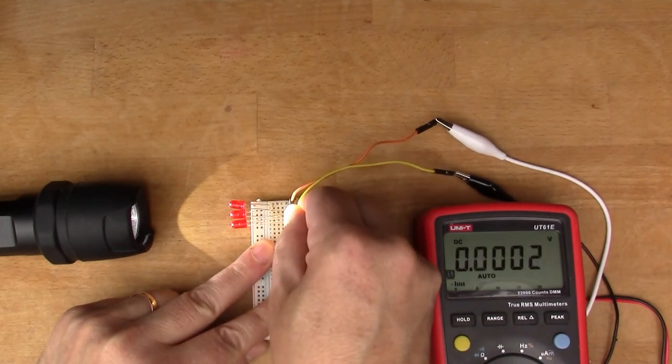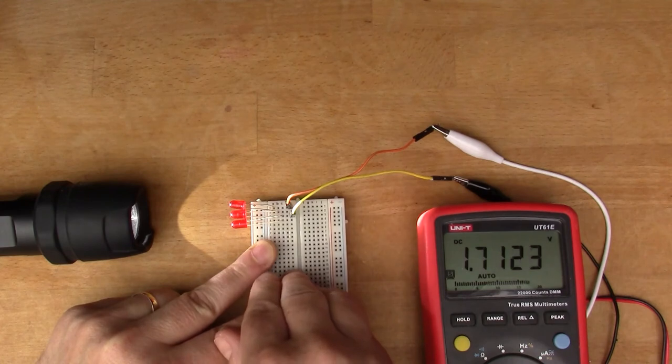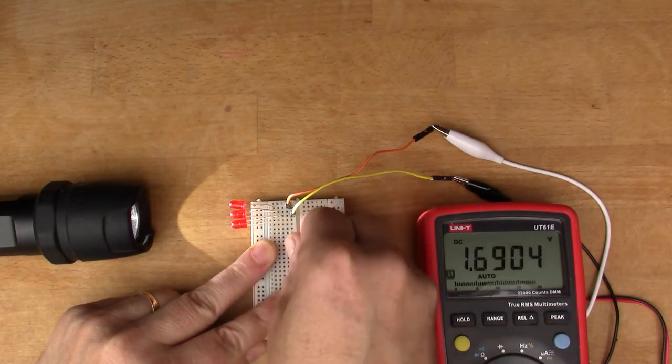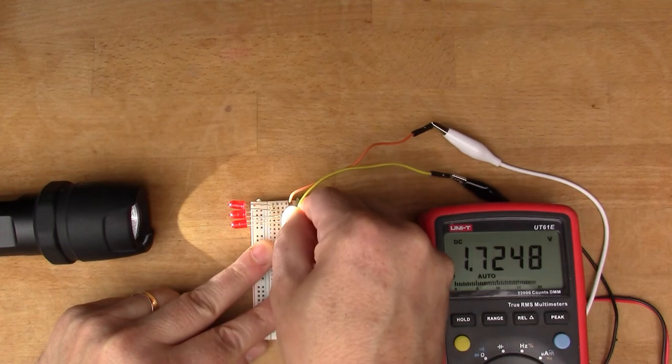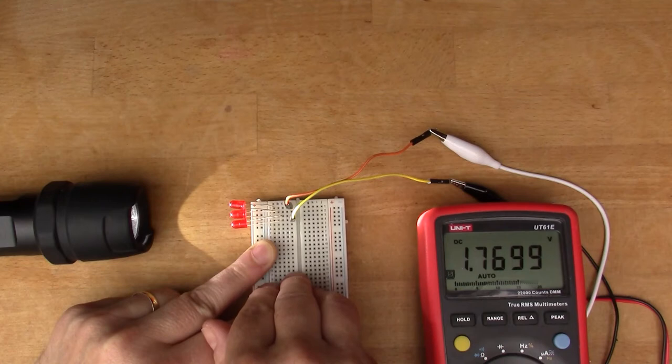We'll add a second one. We've now got 1.71 volts, and if we add a third one that's 1.77 volts.